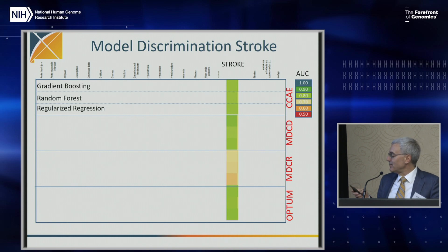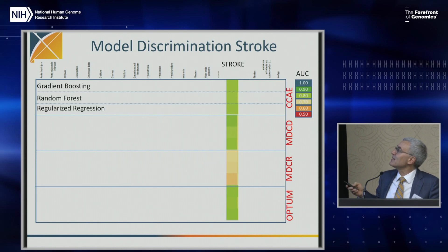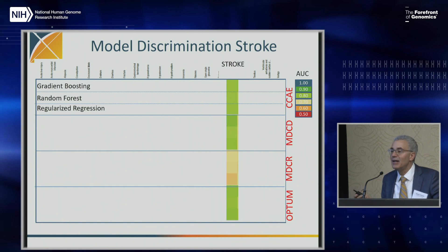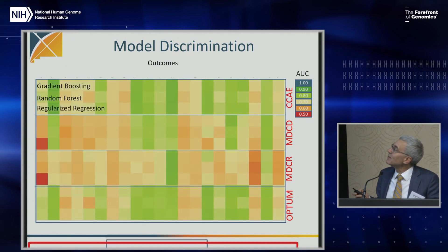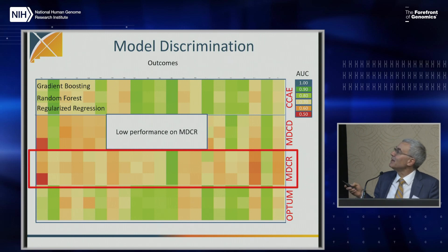Here's a plot where these are different diseases — we look at stroke across four different databases. Within each database there are three boxes for three different methods: gradient boosting, random forest, and regularized regression. We also have deep learning and similar methods. You see different databases perform differently — private payer, Medicaid, Medicare, and another private payer. Green means the highest predictive value, red is the worst. Medicare does the worst.